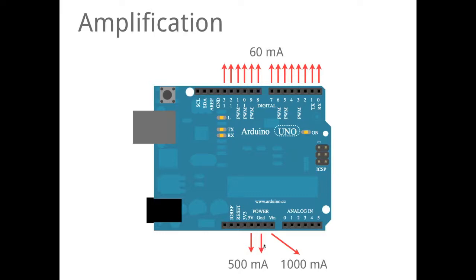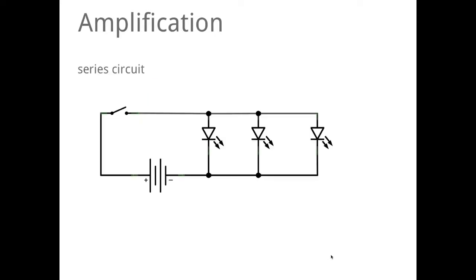They can supply 500 milliamps from this plus and ground, and if you're running an external power supply, then this VIN can supply up to 1000 milliamps. So that's a lot of power.